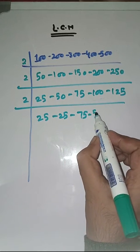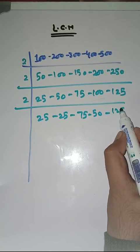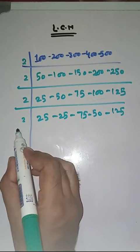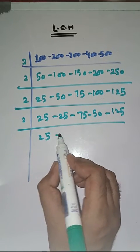Again with 2. 25 as it is, 25 as it is, 75 as it is, 2 times 25s are 50, 125 as it is.